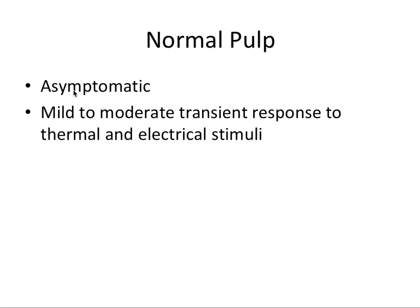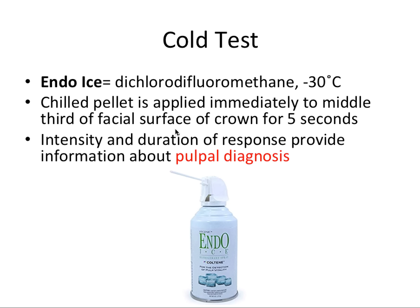A normal pulp is asymptomatic, and when we test it, it has a mild to moderate transient response to thermal and electrical stimuli. By transient, it means it subsides when the stimulus is removed — it's a momentary response. Thermal and electrical stimuli refer to the fibers in the pulp, which are conveniently tested with a cold test and an electric pulp test respectively, the two most commonly used diagnostic tests for endodontic health and disease.